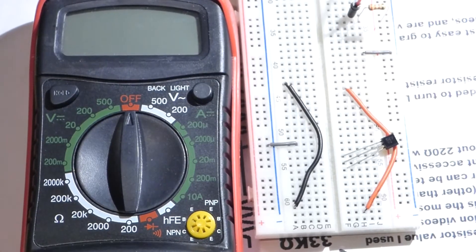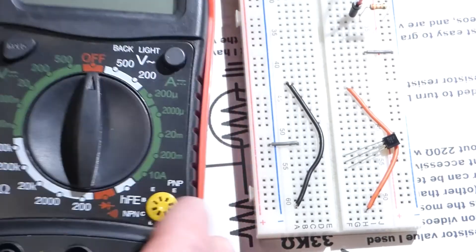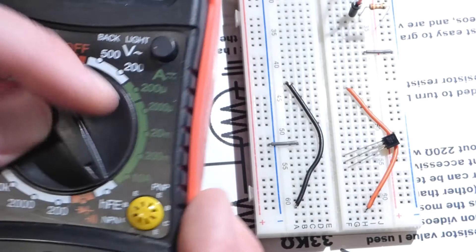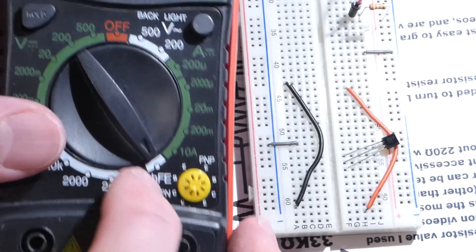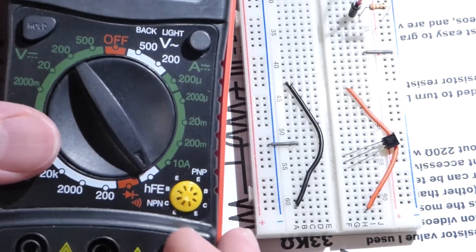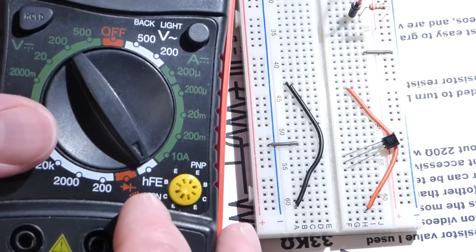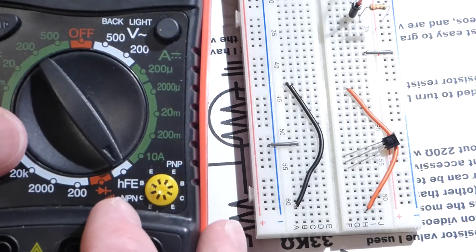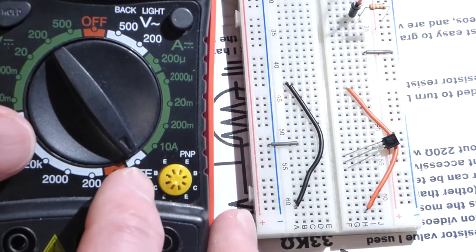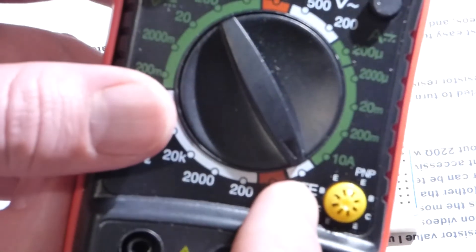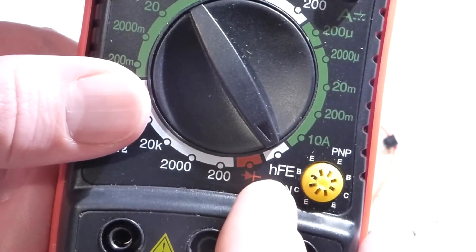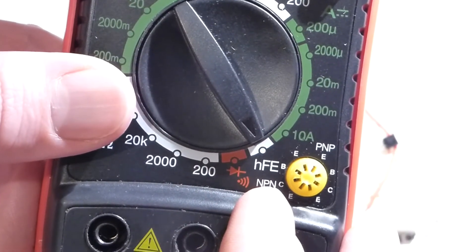Now moving along, we come to this multimeter here. It has a transistor tester. I'm going to put this to HFE. HFE is the same thing as gain. We're using the NPN transistor, so we'll be on this side of the tester there. You can see we got emitter up there, base there, collector there, emitter down there.